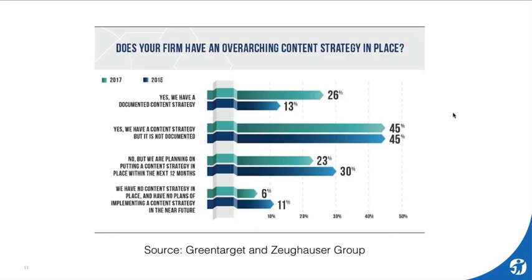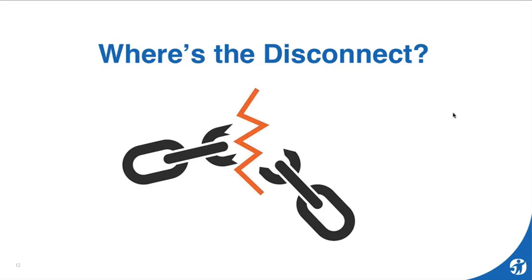Here is a breakdown of that survey. Looking at the results, improvements are across the board, but even 6% said not only do they not have a content strategy, they have no intention of creating one. So where is the disconnect? We keep producing content, there's content overload. Documenting our content strategy is clearly part of the problem.